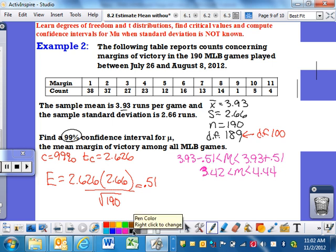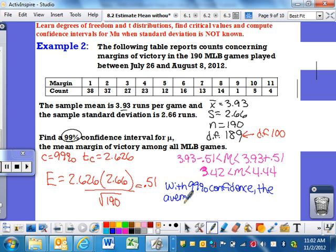You need to write yourself a statement. So how does this work again? With what kind of confidence? 99% confidence this time. We're really confident. What are we talking about? The average margin of victory in Major League Baseball in 2012 is between,